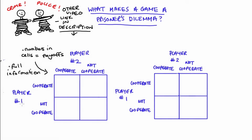For this matrix to be a prisoner's dilemma, it must be the case that mutual non-cooperation gives a lower payoff to both players compared to mutual cooperation. So for instance, if the payoffs for mutual non-cooperation were 60 and 60, it must be the case that both players get a higher payoff when they both cooperate - say 80 and 80.